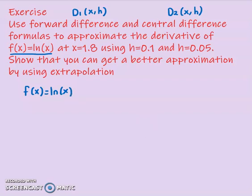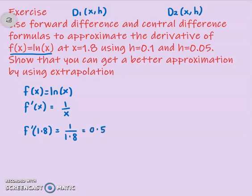It's always good to find the exact solution first. The exact solution is the derivative of f(x) = ln(x), which gives 1/x. For x = 1.8, you have 1/1.8. Using your calculator, you should get 0.55556. I'm giving all solutions to five decimal places. This is our exact solution — keep this in mind.